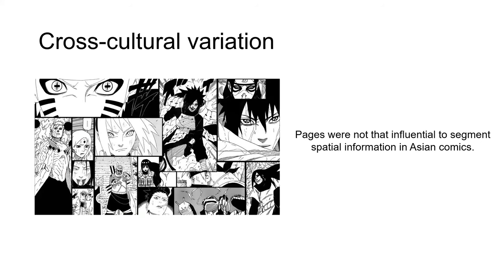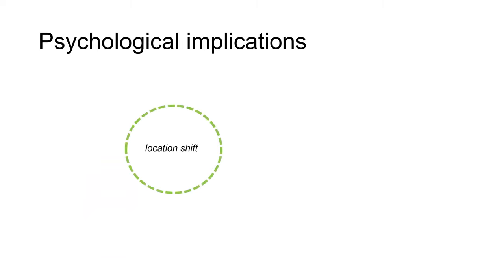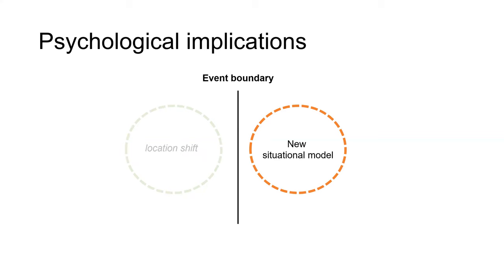New page signaled new space, but less so in Asian comics. New pages had the most discontinuity, and pages were not that influential to segment spatial information in Asian comics. A new situation model might be created when crossing an event boundary — spatial cognition research shows that. A location shift prior to encountering an event boundary becomes less accessible because of the new situation model created and stored in memory. That's why placing situational boundaries at physical page boundaries might make it easier to segment the situation of change in constructing a cognitive situation model. Shifting to a new physical space in the layout could help align with shifting or updating the location in reader situation models.